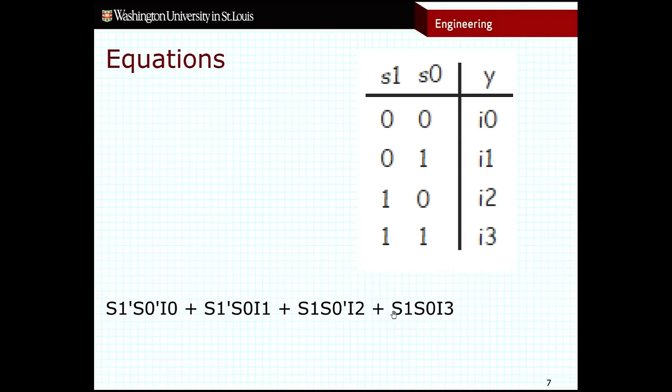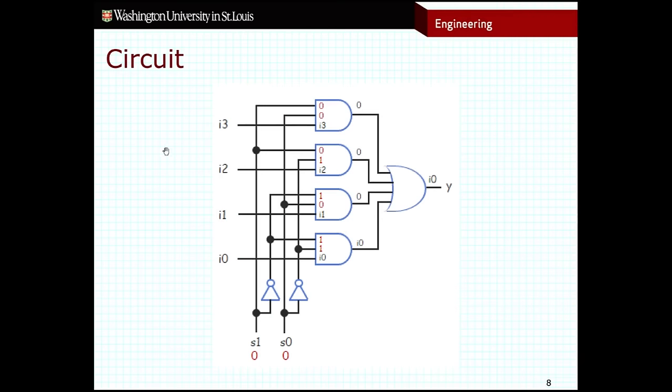And so we can then take this sum of products form equation and turn it into a logic circuit that looks something like this. You can see that I can simplify things by only using two inverters and putting those inverters into multiple AND gates. You see that it does require some three-input AND gates, which we haven't seen a lot of, but they're not too difficult to comprehend. And it also requires the use of a four-input OR gate that you can see over here.